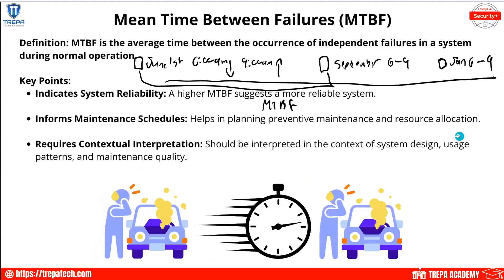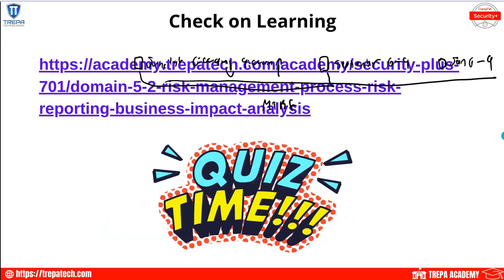Mean Time Between Failures, MTBF, is the average time between the occurrence of independent failures in a system during normal operation.